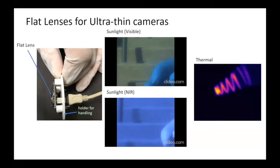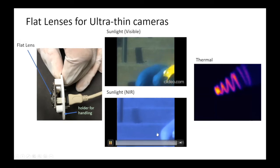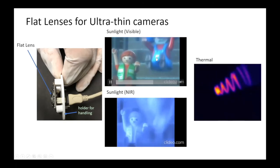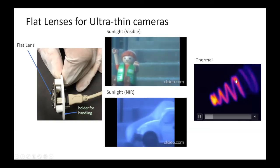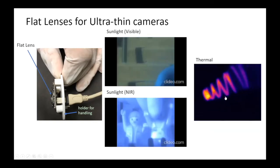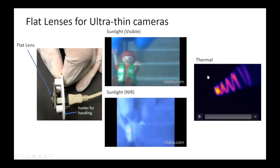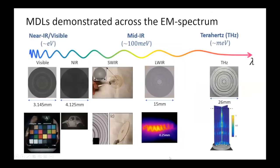I decided to present some of the experiments first to get excited, and then talk about the design. Here we see one of the flat lenses assembled with a sensor for a camera that we have made. This is imaging in sunlight outside with some Legos, this is near-IR imaging, and this is thermal imaging — actually a heated coil in front of a heat gun. We show that our lenses can image across all different kinds of wavelengths, all the way from visible to thermal radiation. Overall, we have demonstrated MDLs across the entire electromagnetic spectrum — from the visible near-IR, SWIR, long-wave IR, and also in the terahertz regime.